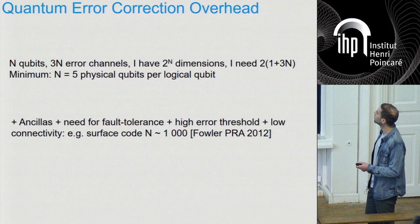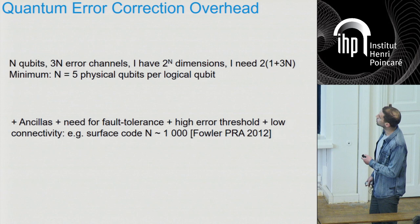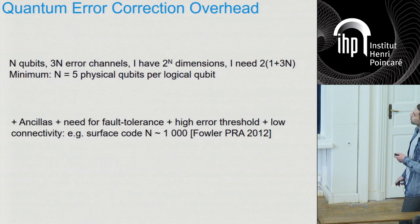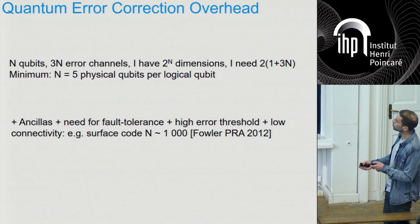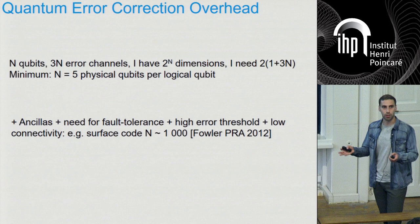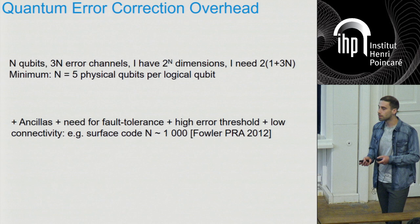All this gives you a code which satisfies all these criteria, which is the surface code — a very interesting and popular code in our community. When you go through the numbers, an order of magnitude is of the order of thousands, if not more, physical qubits per logical qubit. This is now very large: if you want to make a computer with 1,000 logical qubits, you'll need millions of physical qubits to operate it, which is way beyond what we currently know how to do.